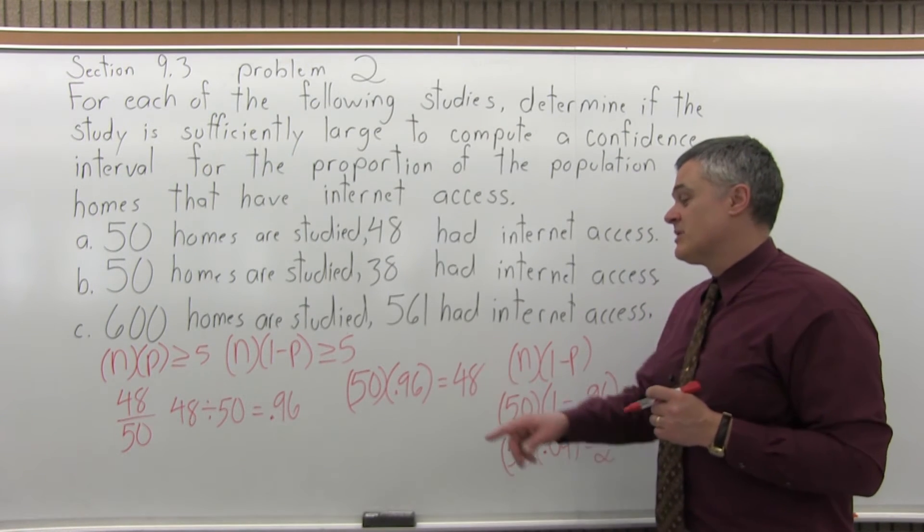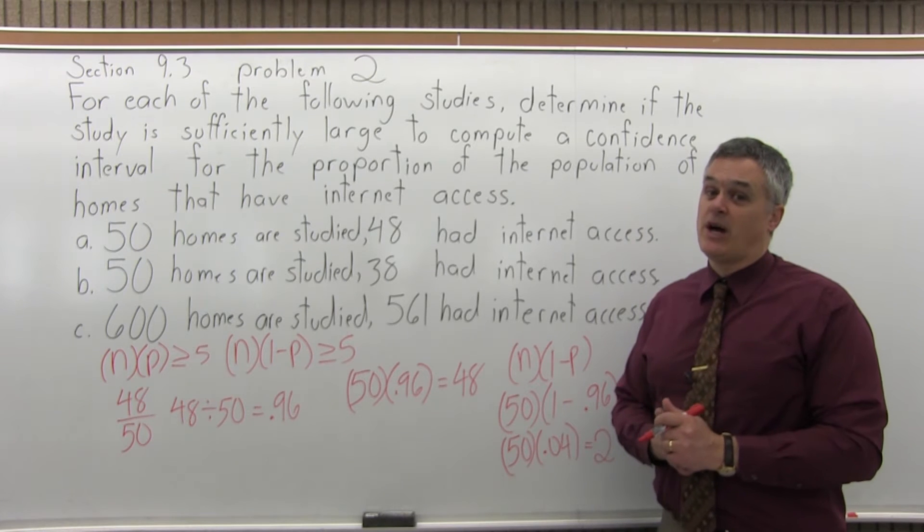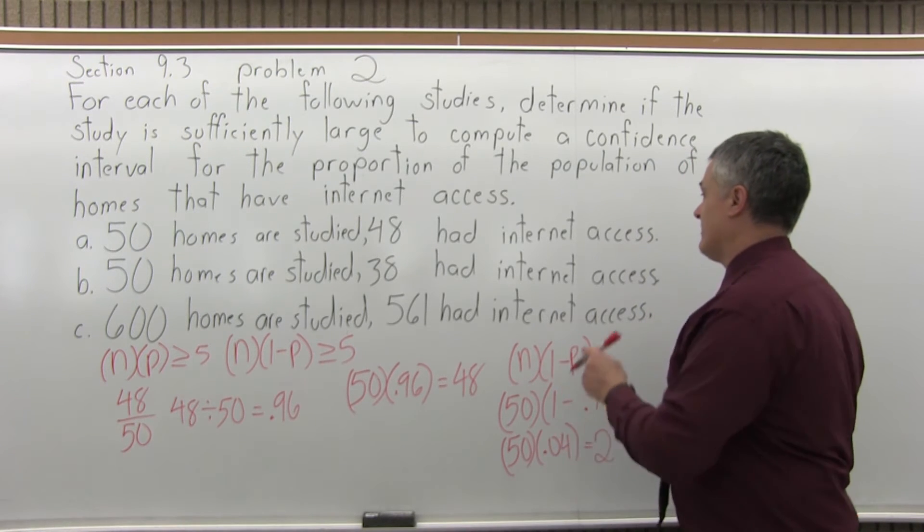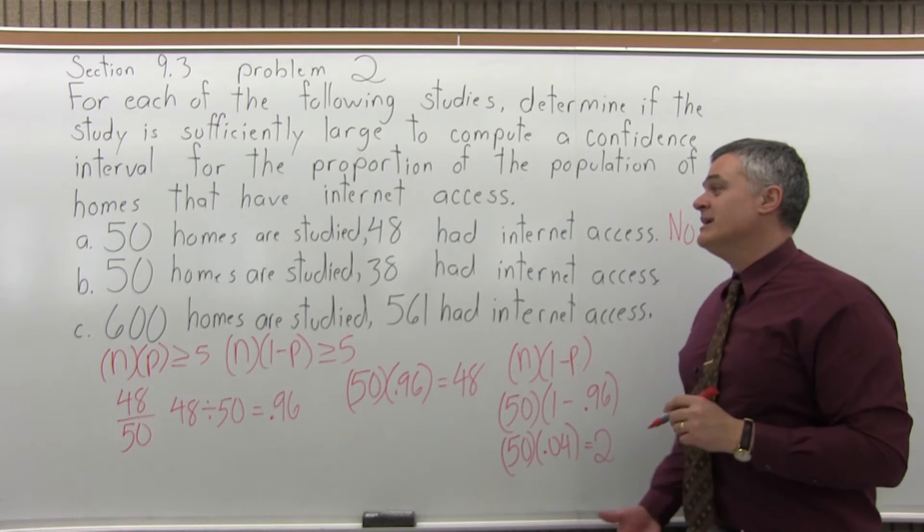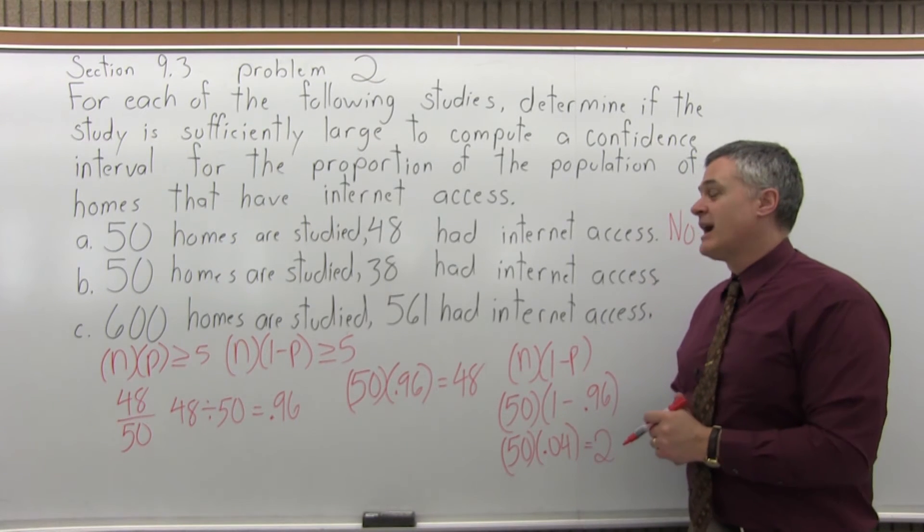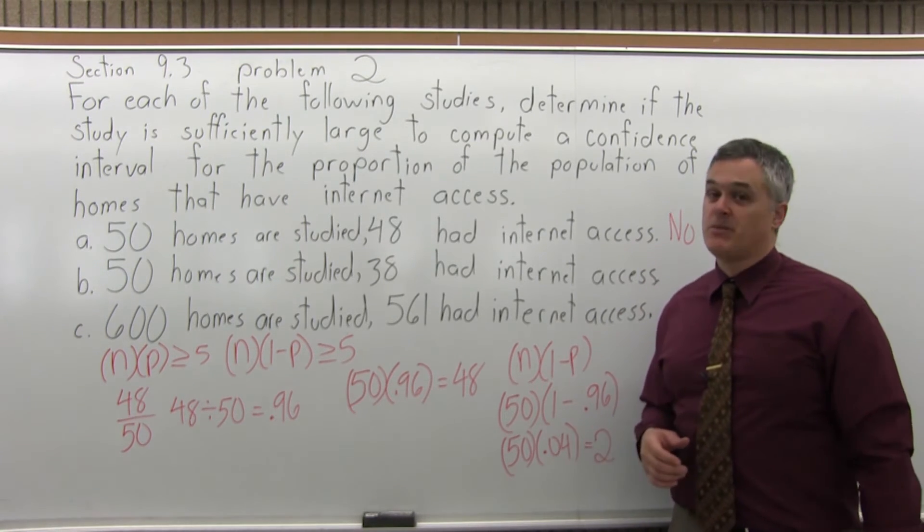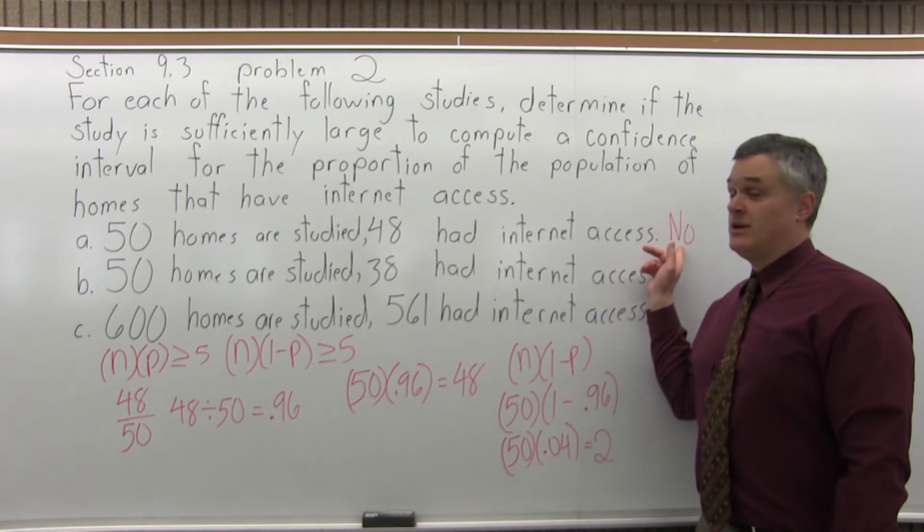So, n times p is okay, but n times 1 minus p is not. And they both have to be at least 5. So, for part a, is the study sufficiently large to have a confidence interval for population proportion? No, it's not.